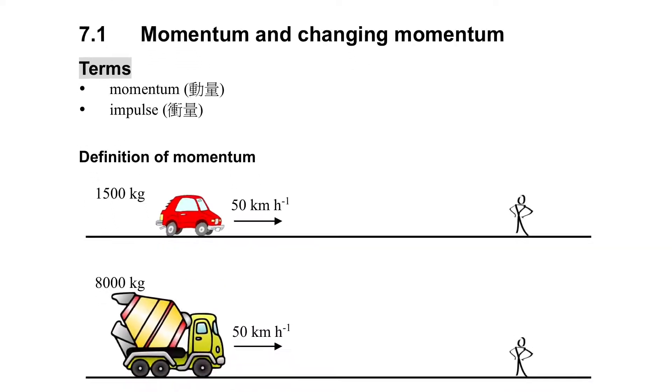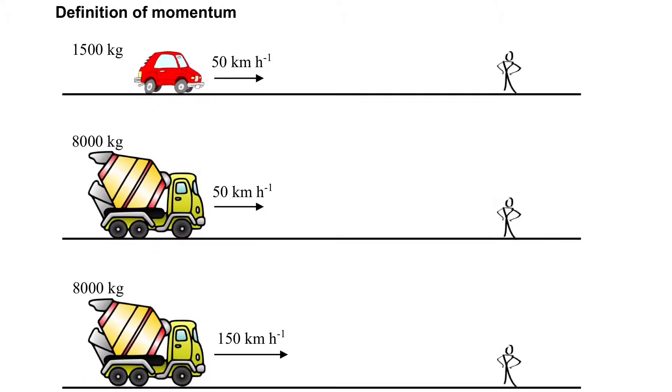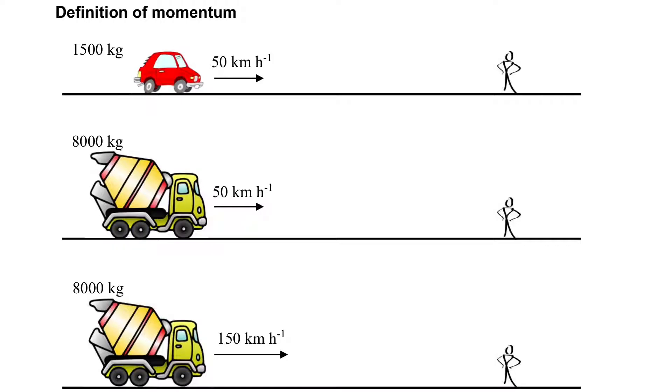What is momentum? Let's consider the following example. If we have a car of 1500 kg traveling at 50 km per hour that hits a person, we expect that this person will fly away, right?